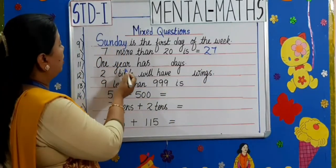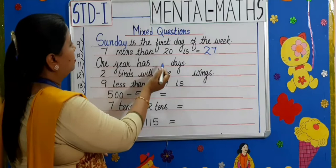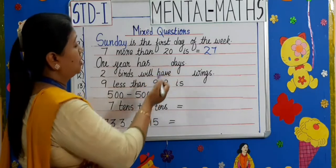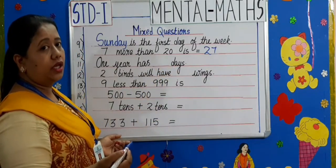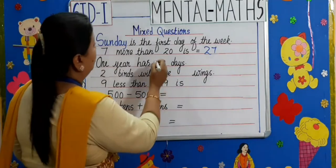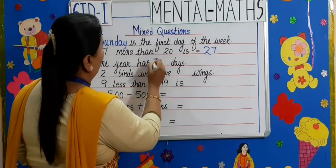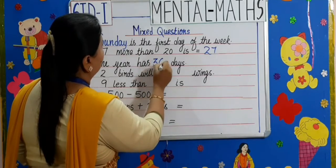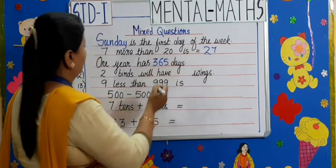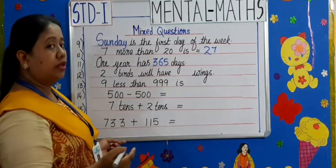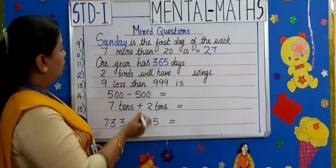Moving on to the next one: one year has how many days? 365 days.